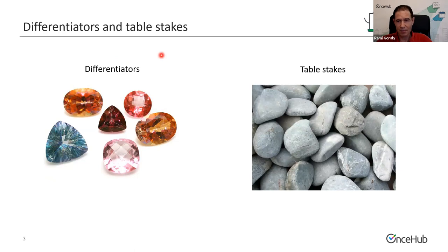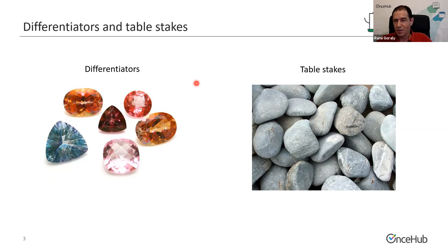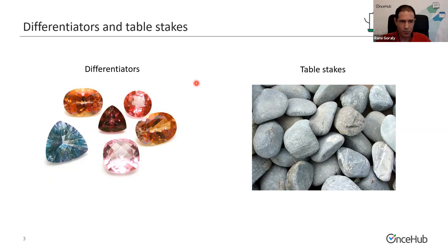What you also need to have is table stakes. Each product has table stakes. Table stakes are things that you must have in your product — you cannot go out without these things. For example, if we're talking about meeting scheduling, you need to have a cancel schedule and reminders. These are table stakes for these types of products in today's market.